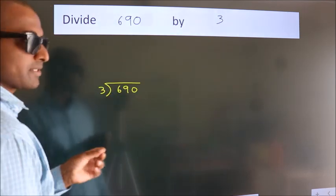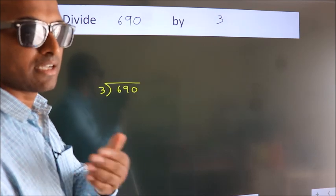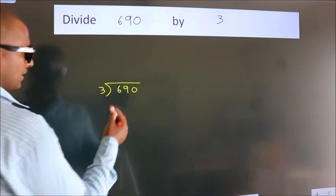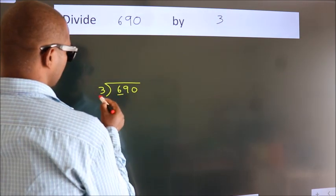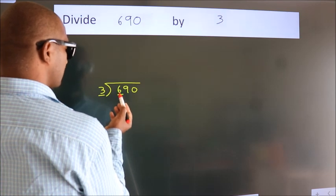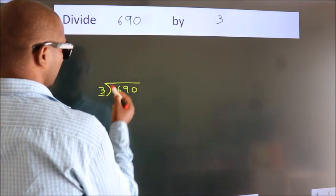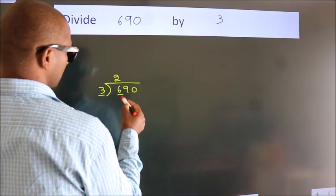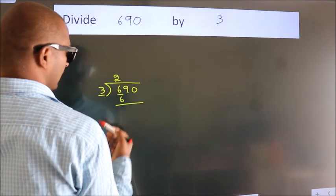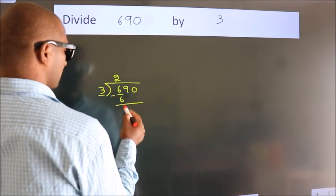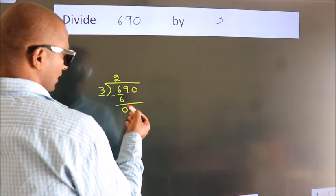This is your step 1. Next, here we have 6, here 3. When do we get 6? In 3 table, 3 2s, 6. Now, we should subtract, we get 0.